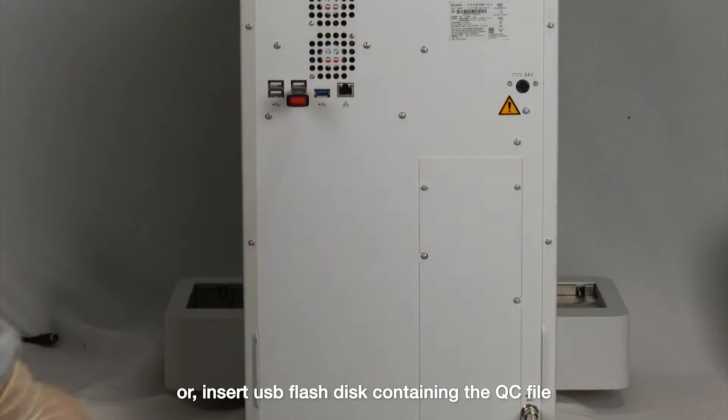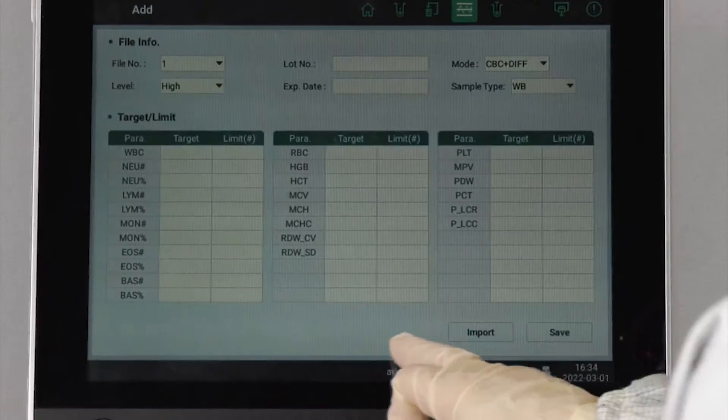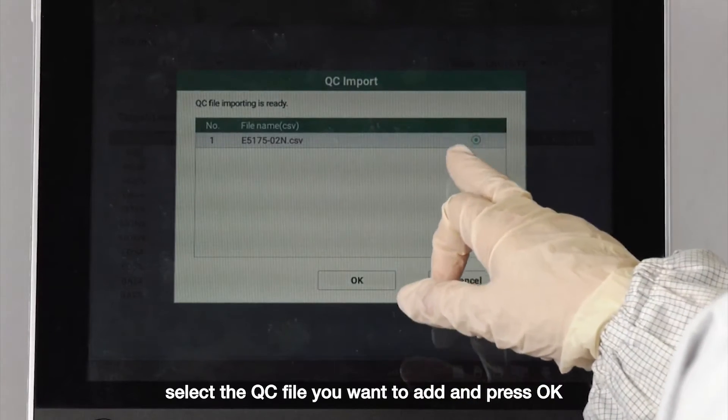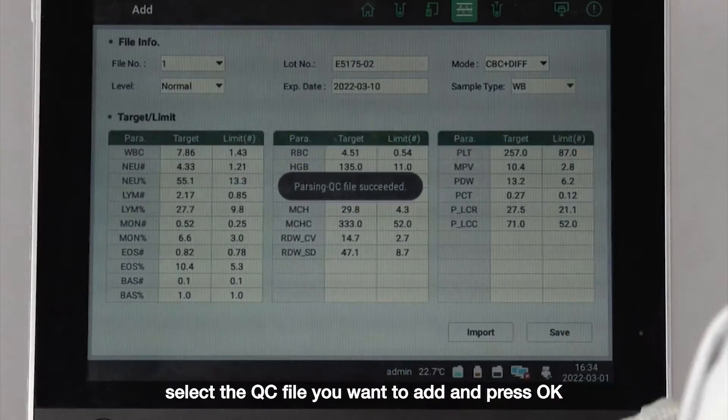Or, insert USB flash disk containing the quality control file under specified directory. Press import button, select the quality control file you want to add and press OK.